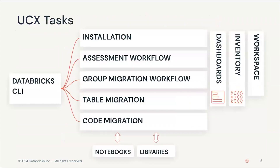First, we have the installation process, which is performed using the Databricks CLI. Simply by running the installation command from your terminal, you can start using UCX on your workspaces. After this, we have tasks related to the actual migration, like the initial assessment, the migration of the legacy workspace groups to account groups, the migration of tables from Hive to Unity Catalog, and the migration of legacy code to be Unity Catalog compatible. UCX will generate all of these jobs automatically, so it's as easy as following the step-by-step guide available in the repo.